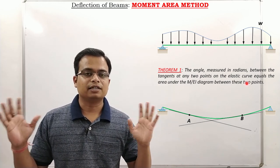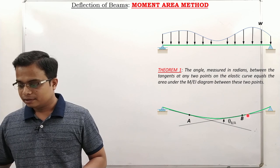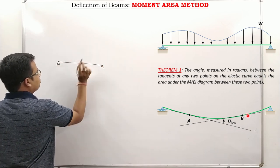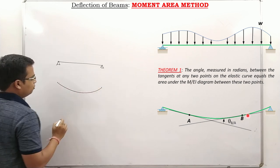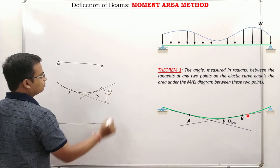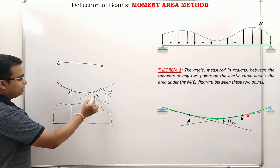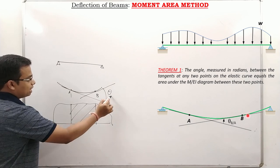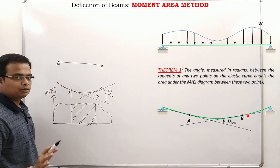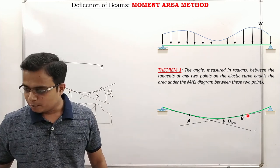This angle is equal to the area of the bending moment diagram between A and B — more precisely, area under the M/EI diagram between A and B. In a nutshell: here is a beam with some loading, it deflects, we draw the tangent at A and tangent at B, and there is an angle between them. That angle is equal to the area under the M/EI diagram between those two points. As the session progresses, all confusion will be resolved.